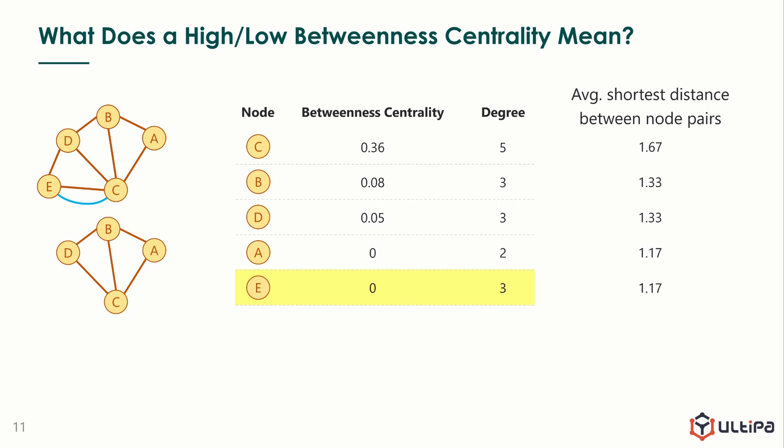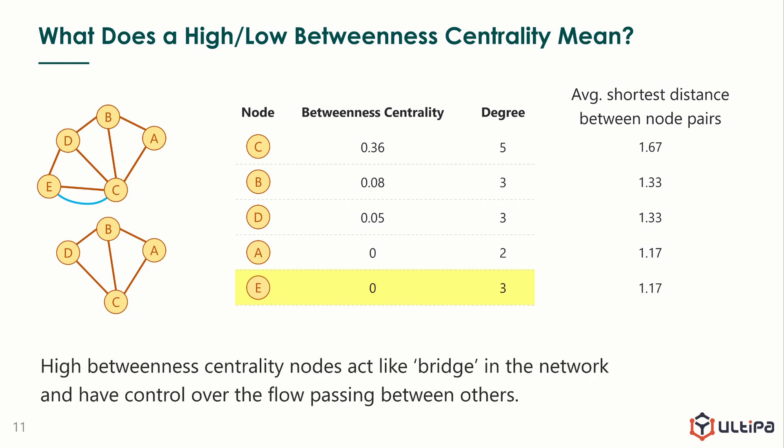So we could see from this little experiment, when deleting nodes with higher betweenness centrality from the graph, the structure of the remaining graph becomes less beneficial for the virtual flow in the graph. In a real network, the flow can be of information, interaction, influence, physical items, and so on. High betweenness centrality nodes act like bridge in the network and have control over the flow passing between others.